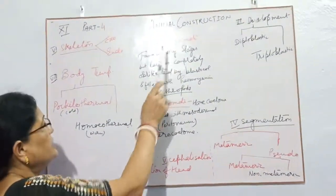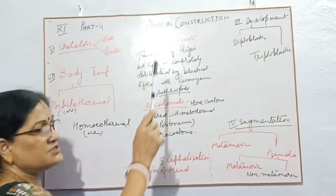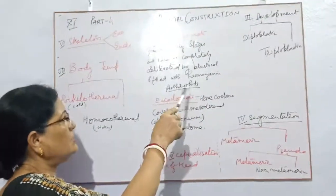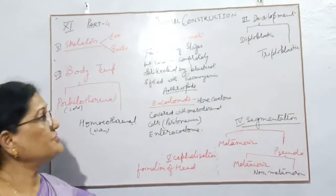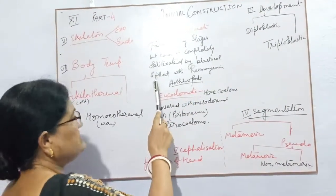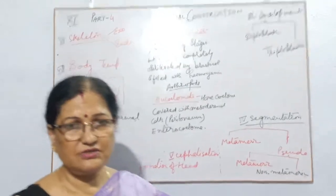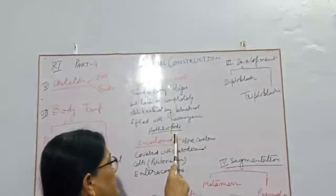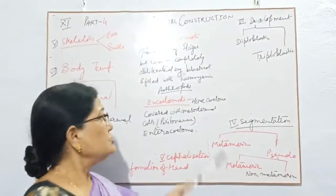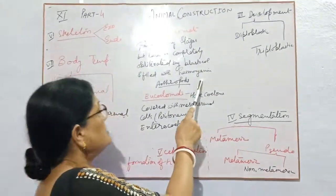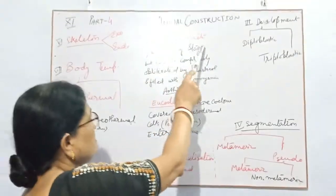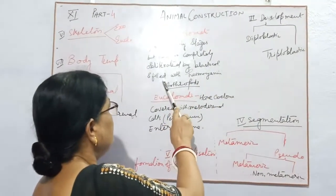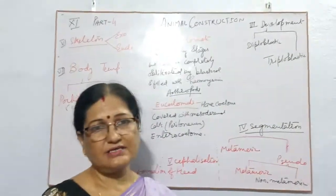Haemocoelom is found in early stages of the development of the young one. But after some time it is completely obliterated by the blastocyst, or the cavity of the blastula, which is filled with haemolymph. You know we have haemoglobin in our blood, so our blood is red in color, but the arthropods' blood is light blue in color due to the presence of haemolymph. So these organisms have a haemocoelom cavity, and this is known as Haemocoelom.